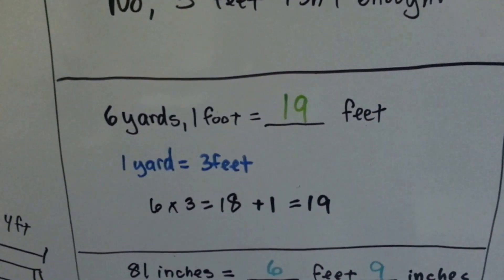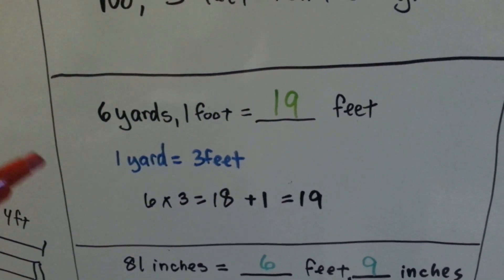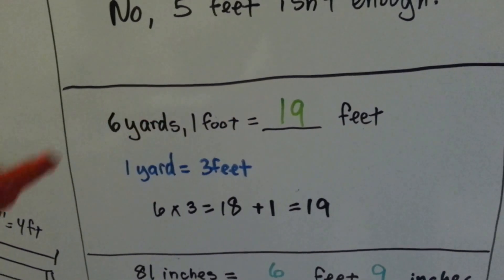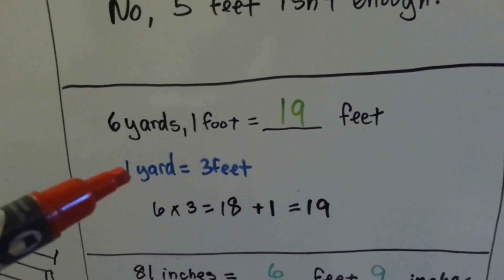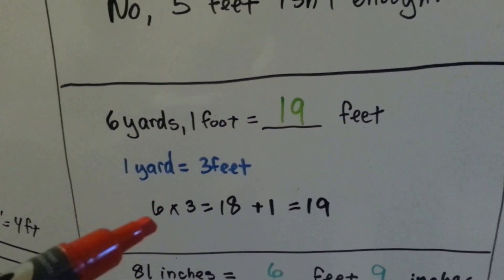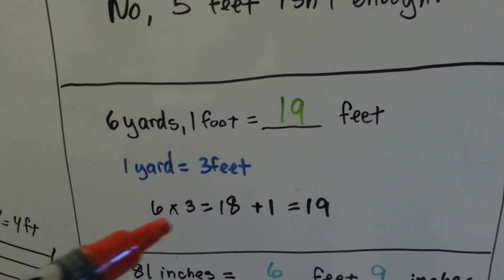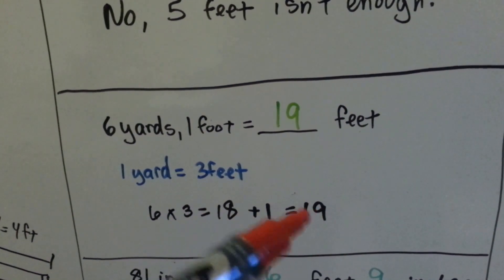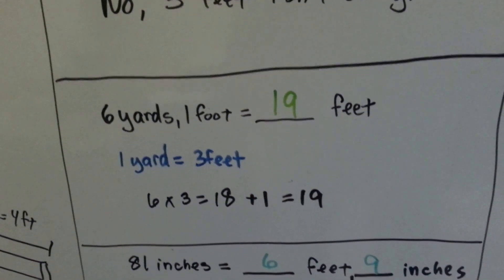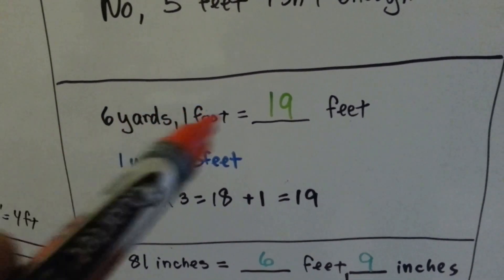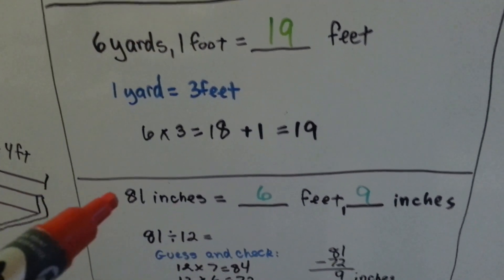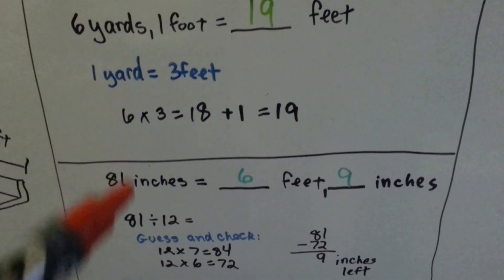We can multiply and add to convert measures. If we had 6 yards and 1 foot and wanted to convert it all into feet, we know that 1 yard is 3 feet, so we can multiply the 6 yards times 3 and get 18. We add the extra foot, the 1, and get 19 feet. That's a mixed measure. When you've got yards and feet, or miles and yards, or feet and inches, that's called a mixed measure.